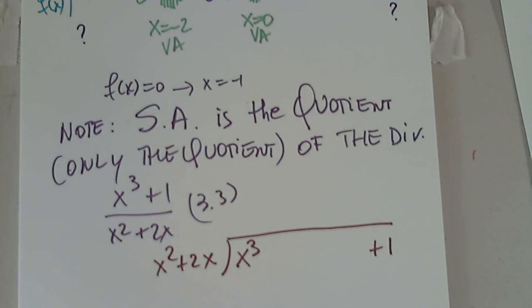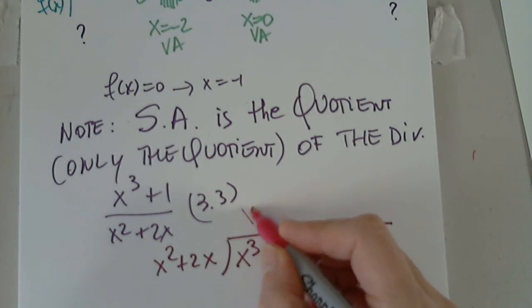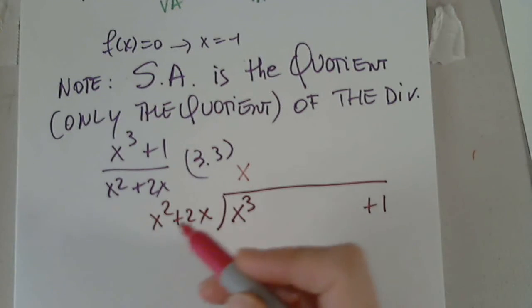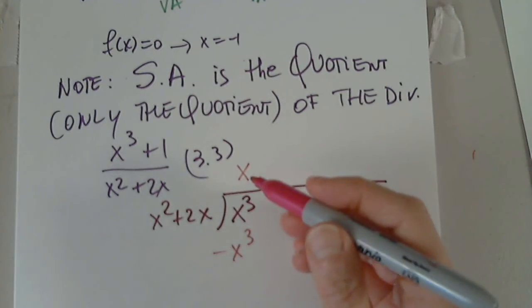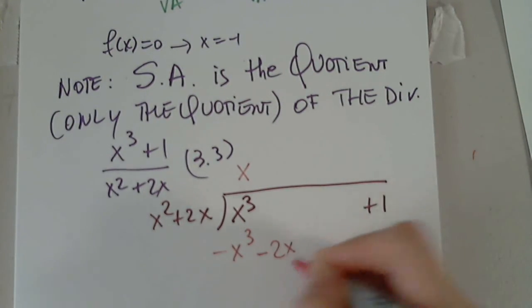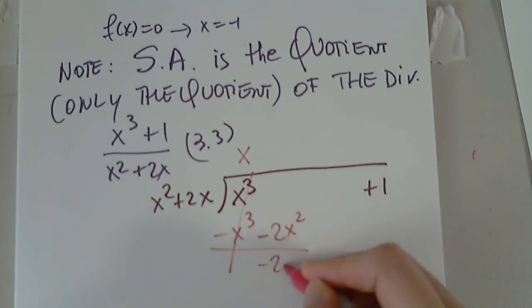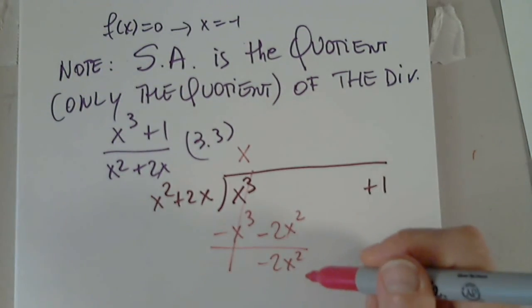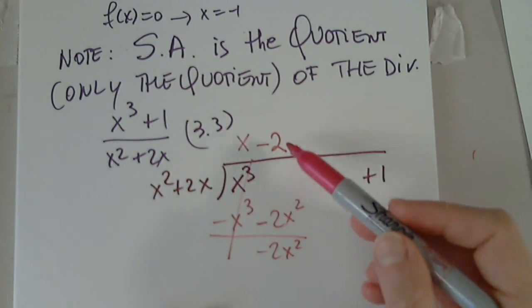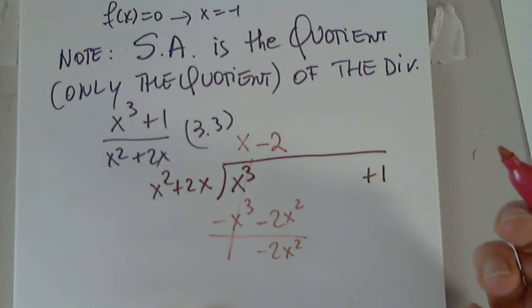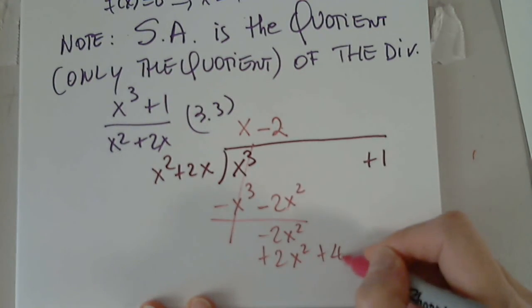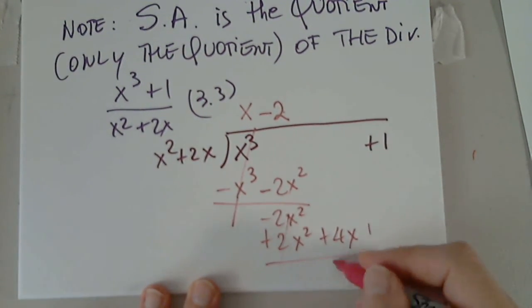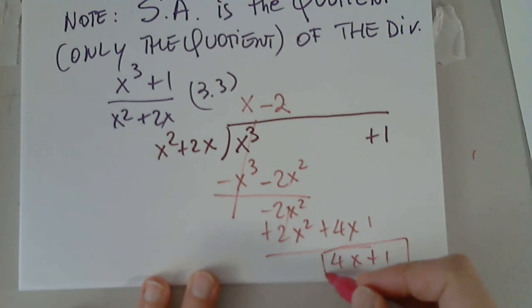So then what do I do? x squared times what is x cubed? x. x times x squared is positive x cubed. Subtract. x times 2x is 2x squared. Subtract. I don't have where to write it. It's the next in line. Okay. Negative 2x squared. x squared times what is negative 2x squared? Minus 2. Negative 2 times x squared is negative 2x squared. Change the sign. Negative 2 times 2x. Negative 4x. Change the sign. Plus 1. Not yet. 4x plus 1. And this is the remainder. I'm done.